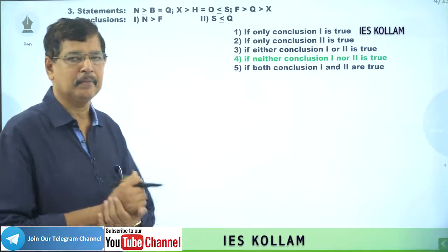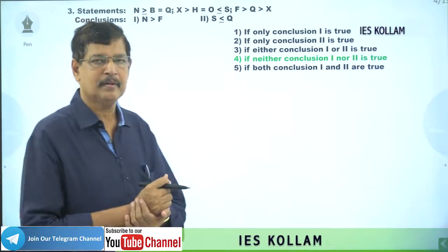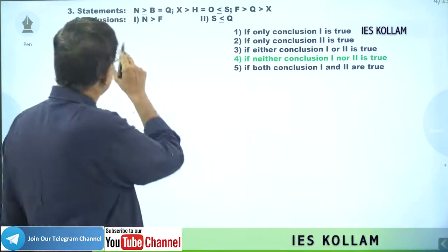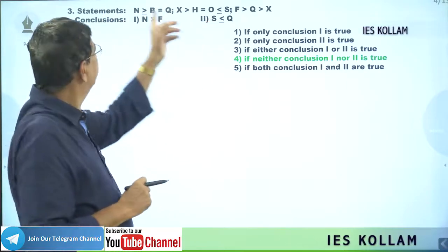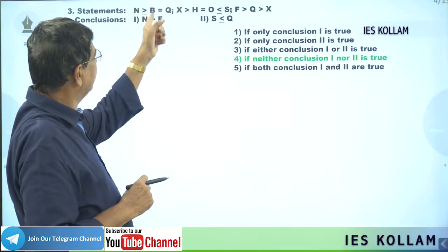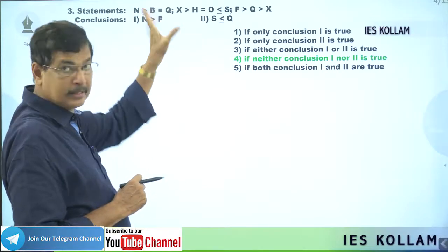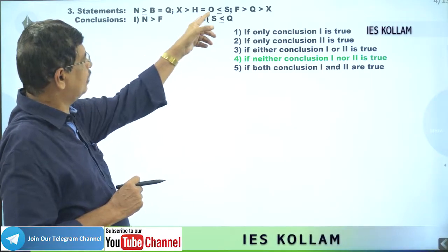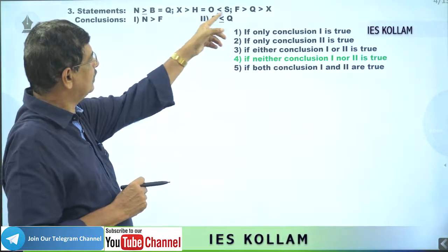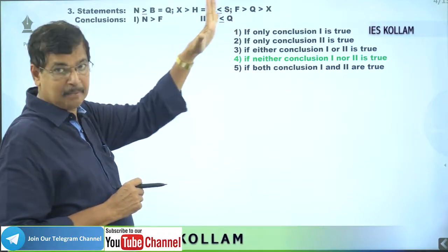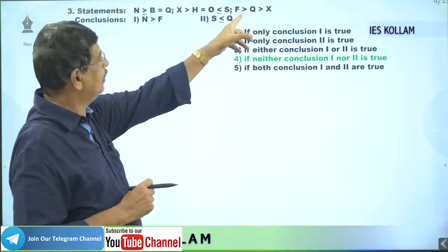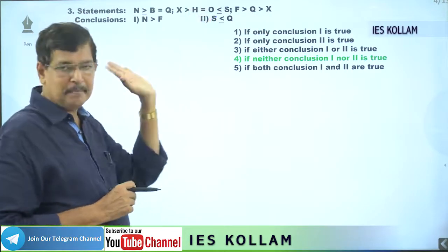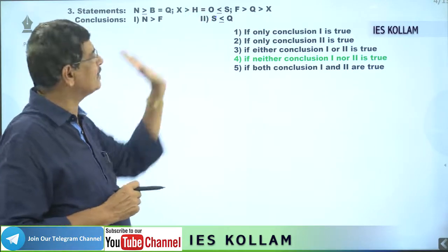You can take the third problem. The statement is already given: n greater than or equal to b, which equals q — that is the first statement. Another one: s greater than x, which equals o less than or equal to s — that is the second statement. And the third one: f greater than q greater than x. Three statements are given.